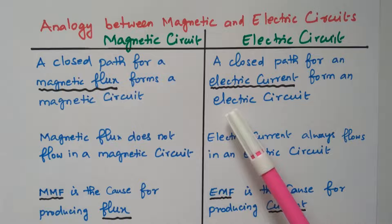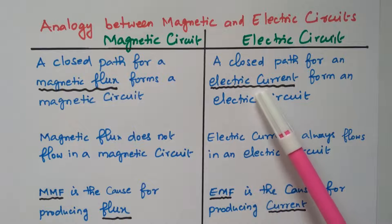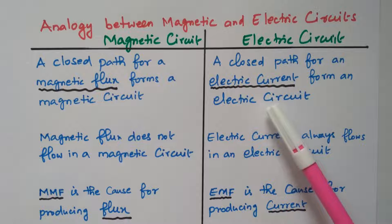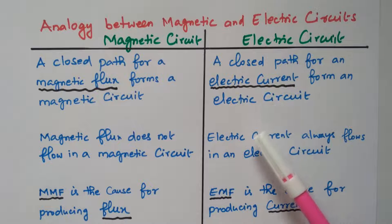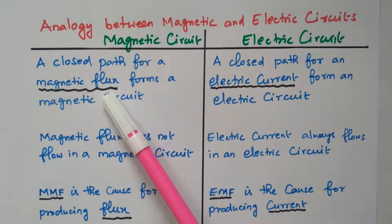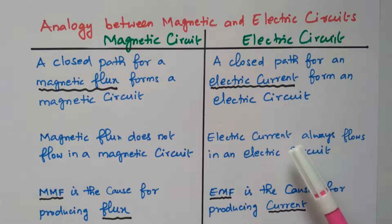In the case of the electric circuit, the electric current forms the closed loop. So in the magnetic circuit, flux is available to form the closed loop, while in the electric circuit, current is available to form the closed loop.